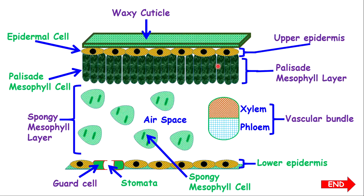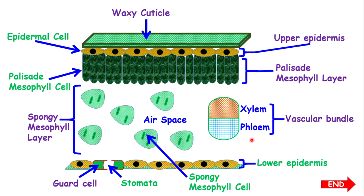Below the upper epidermis, we have what I call the palisade mesophyll layer. The palisade mesophyll layer contains palisade mesophyll cells — if you see one labeled, simply palisade mesophyll cell. Now below the palisade mesophyll layer, you have a spongy mesophyll layer. In the spongy mesophyll layer, you may find spongy mesophyll cells, you will see the airspace, and you also have the vascular bundle.